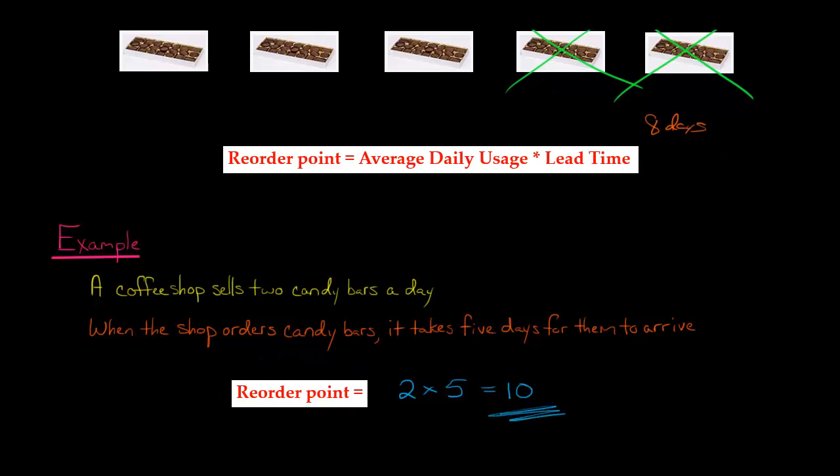So how do we interpret this 10? That's the reorder point, but what does it mean? It means that we closely monitor the number of candy bars in our inventory. When we have 15, 14, or 13, we don't need to buy any more candy bars. But when we hit 10, at that point, we have to do a purchase order and buy more candy bars from our supplier.